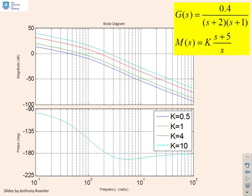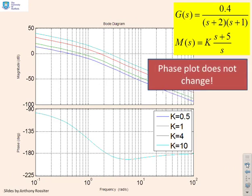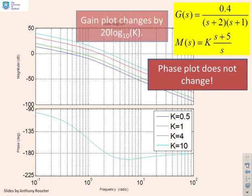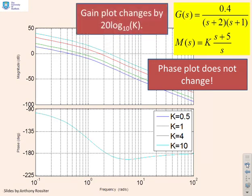Here are the Bode diagrams. Since we've done this before, we'll go through fairly quickly. First, we note the phase plot does not change. Second, the gain plot changes by 20·log₁₀(k) dB. We covered that in detail in the last video.